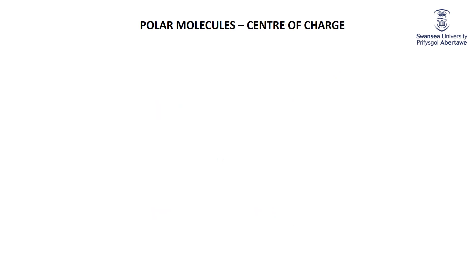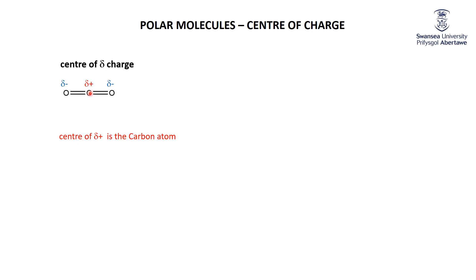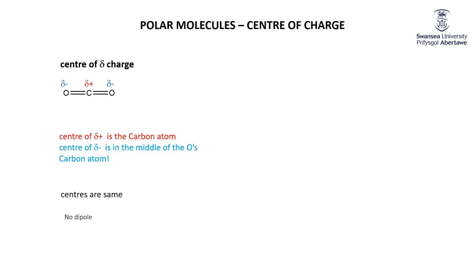Another way to think about polar molecules is to consider the centers of positive and negative charge. For carbon dioxide, the center of the slightly positive charge is the carbon atom. The center of the slightly negative charges — one on each oxygen — is smack in the middle between them, which is also the carbon atom. Since the centers of delta-positive and delta-negative charges are the same, the molecule is non-polar.